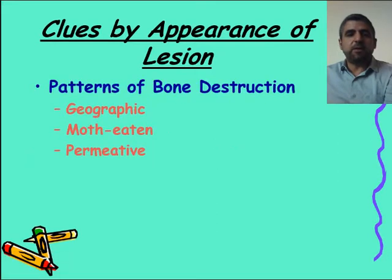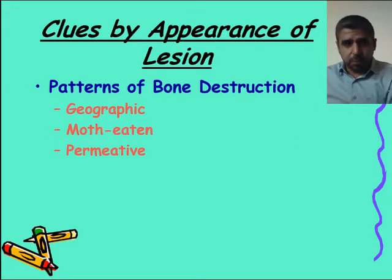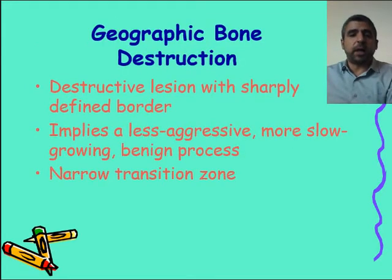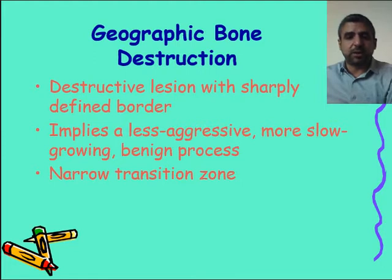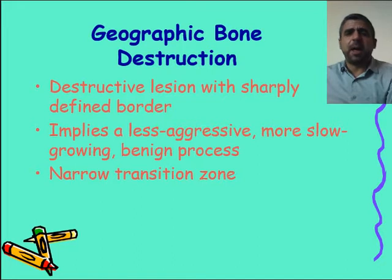Patterns of bone destruction can be categorized into three types. First, geographical bone destruction means the lesion is sharply defined — if you and I both draw a line on the outline, our lines will match exactly. The borders are well-defined and there is a narrow zone of transition, indicating a less aggressive, more slowly growing lesion, most likely benign.